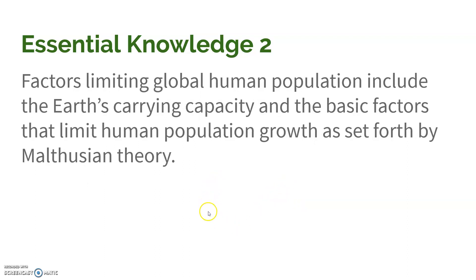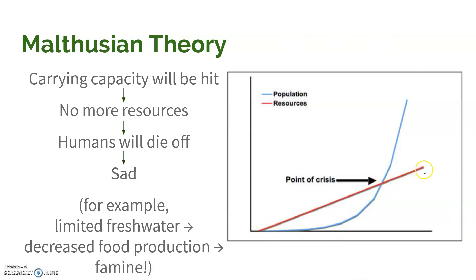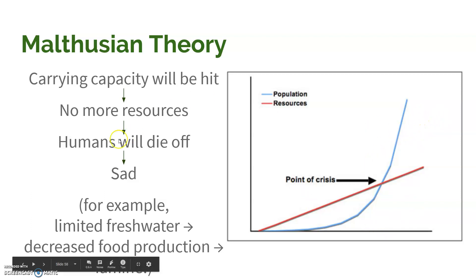Factors limiting global human population include our carrying capacity and the basic factors set forth by Malthusian theory. Thomas Malthus was a really important, smart guy who argued there's going to be a point where we're not going to have enough resources for everybody. He put it all together showing that our resources are only increasing linearly, but our population is growing exponentially. So there's going to be a point called the point of crisis, and after this point of crisis, there's not going to be enough resources for the people we have, and then they'll die off.